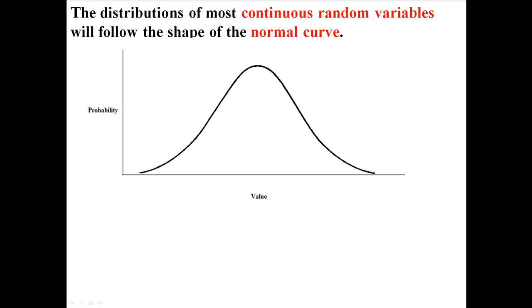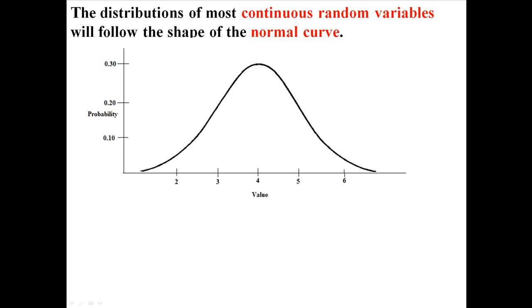Now I'm going to label it where on the bottom we have values, and then on the y-axis we have the different probabilities associated with those values. So I'm just going to make up some numbers here. You can see that 4 has the highest probability that's in the middle.